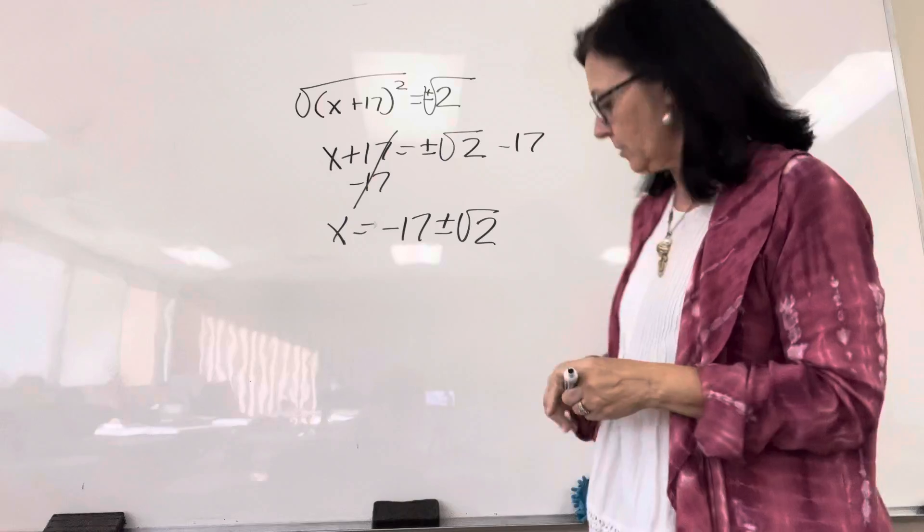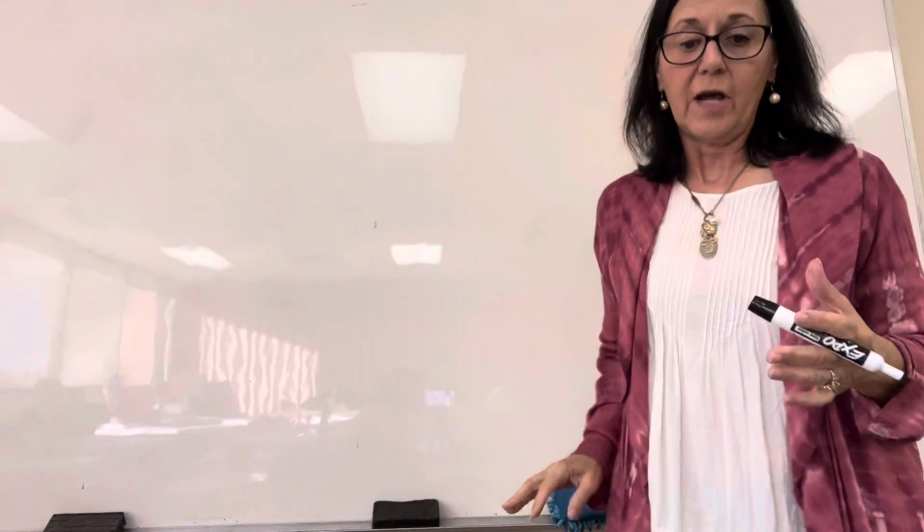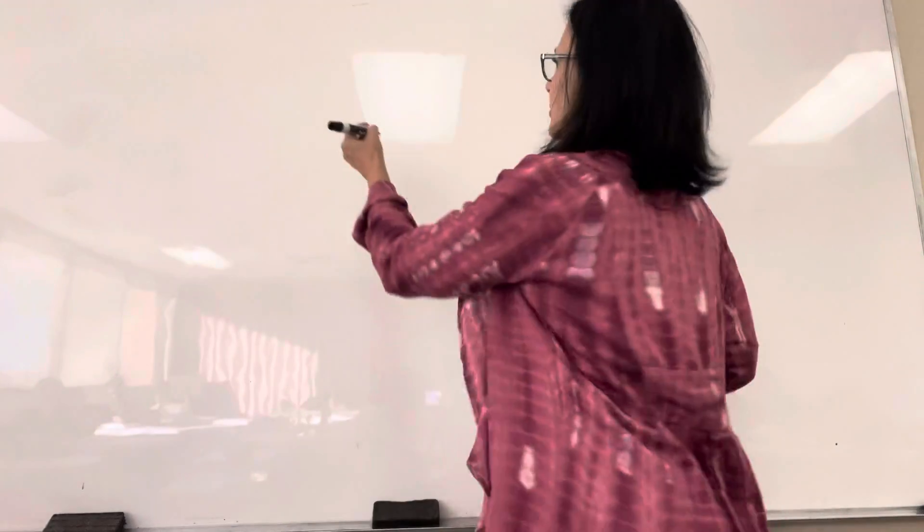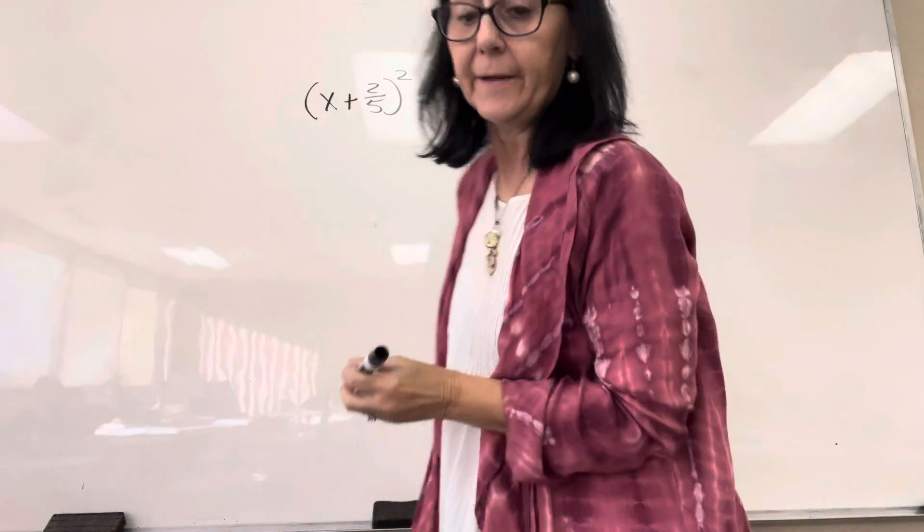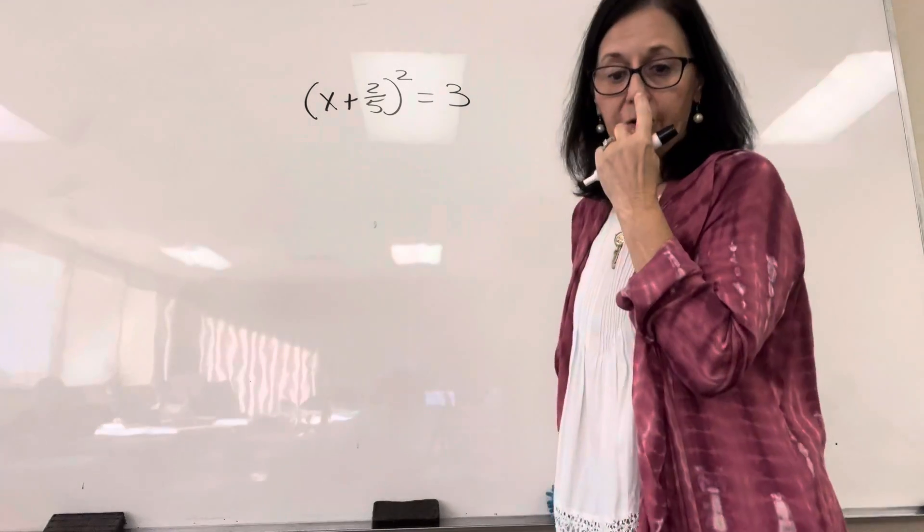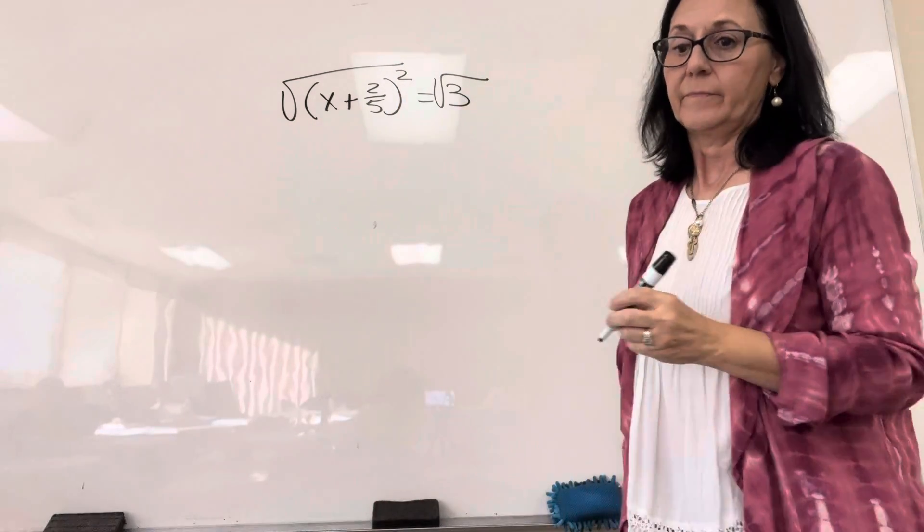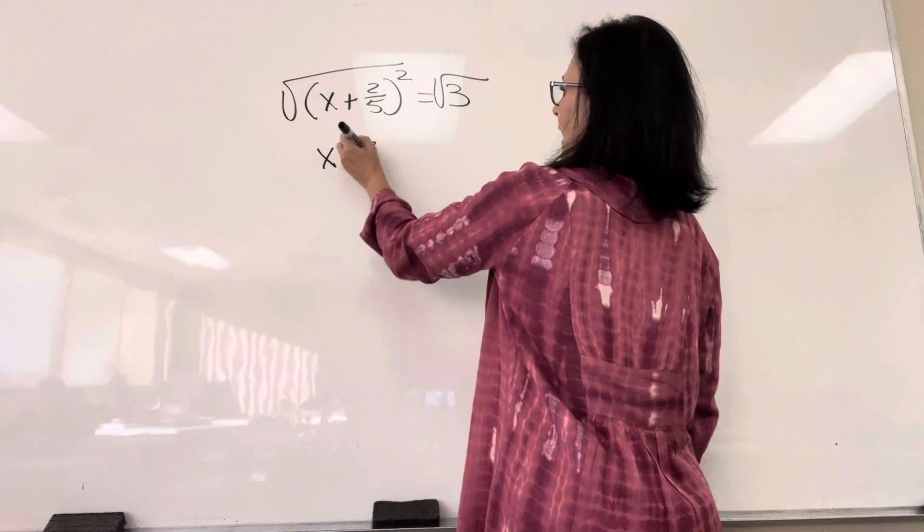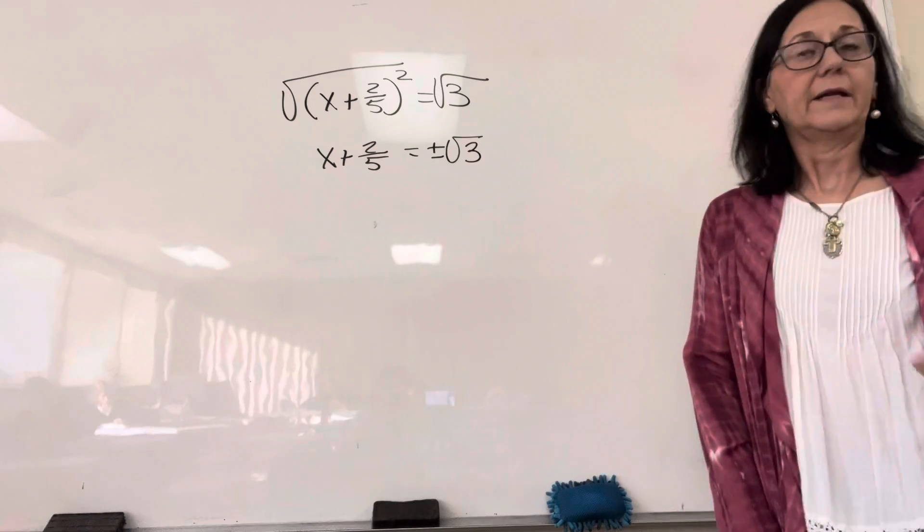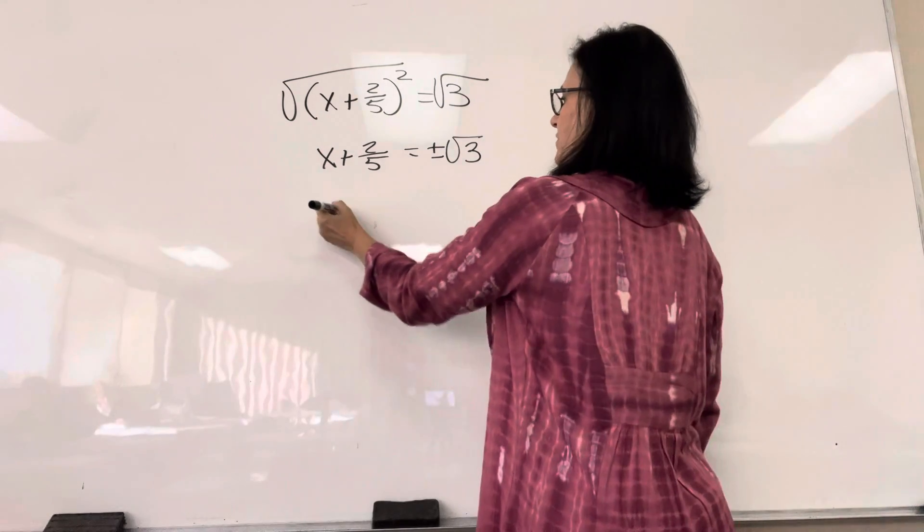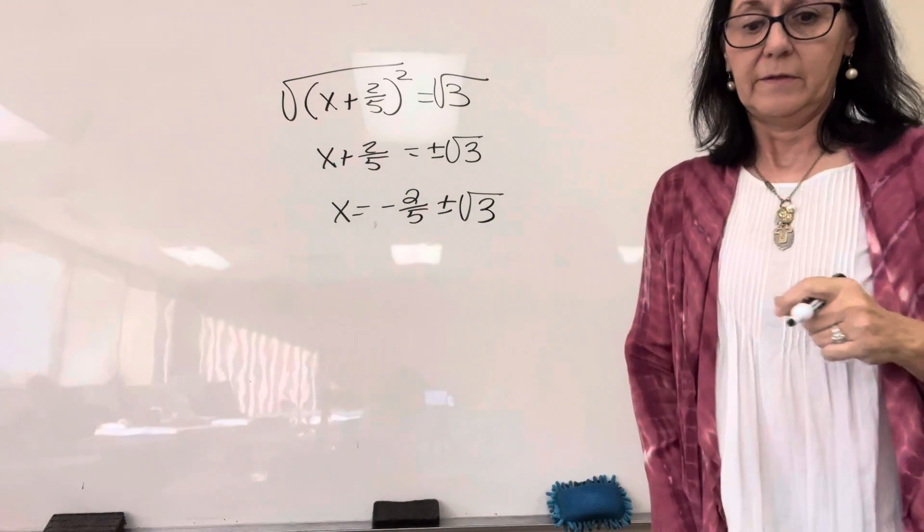Alright, let's look at the only other example. This is so much like what we've already worked that they do not give us a lot of examples. So, (x + 2/5) squared equals 3. When you take the square root of both sides, on the right-hand side, you're just left with what's under the radical, and it equals plus minus the square root of 3. Subtracting your 2/5 on both sides, x is negative 2/5 plus minus the square root of 3.